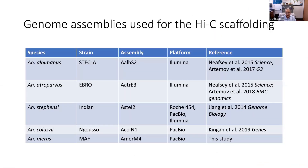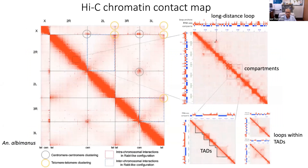The genome assemblies used for Hi-C scaffolding are available at VectorBase, except for Anopheles merus, for which we developed a new assembly in this study in collaboration with Rob Waterhouse's group and the Jake2 group. Here is a representative Hi-C contact map for Anopheles albimanus. You can see chromosomal territories X, 2R, 2L, 3L, and 3R, and also interactions — for example, centromere-centromere clustering in gray circles and telomere-telomere clustering in yellow circles.